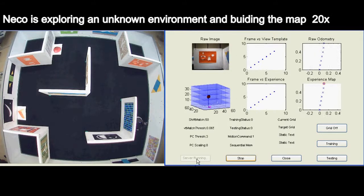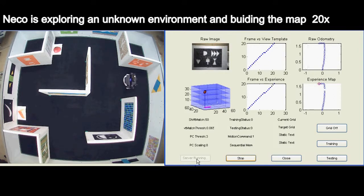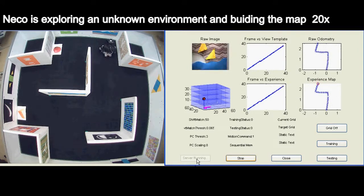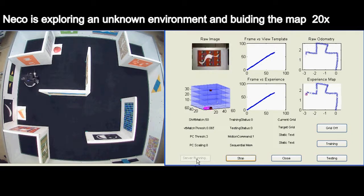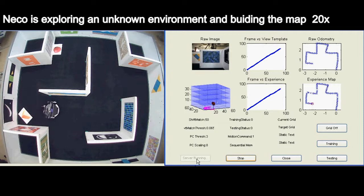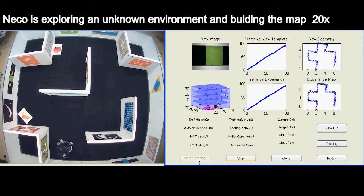Niko, our neural cognitive robot, is starting to explore the environment. Animals have the ability to integrate environment information and self-motion to build a map, which is known as a cognitive map in neuroscience.